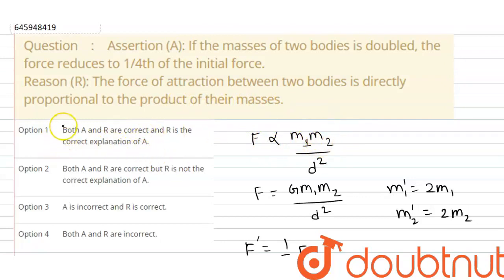So ab haem option check kertate hai. Option first hai, both A and R are correct and R is the correct explanation of A. This is the wrong option. Second option hai, both A and R are correct but R is not the correct explanation of A. Yeh bhi wrong option ho ga hai. Third option hai, A is incorrect but R is correct. Yeh option apna correct ho jata hai. Is ke vyaab pa haem kaathe hai ki A is incorrect and R is correct.